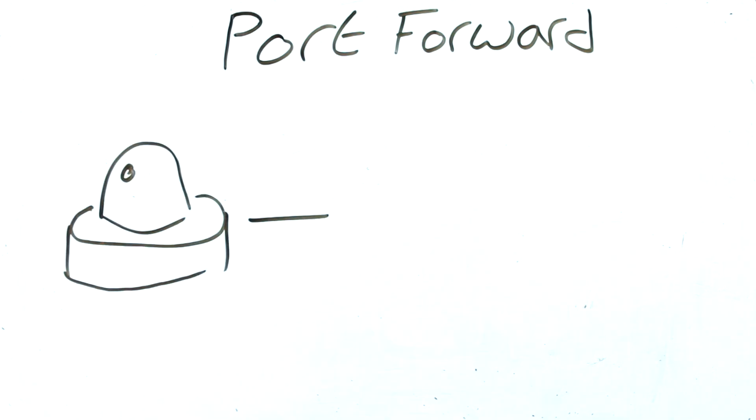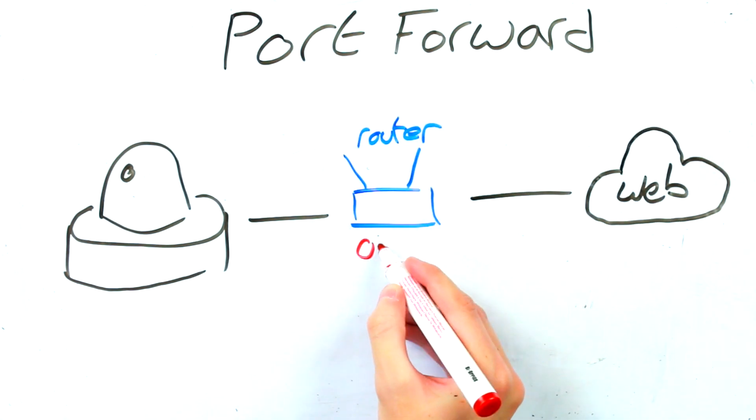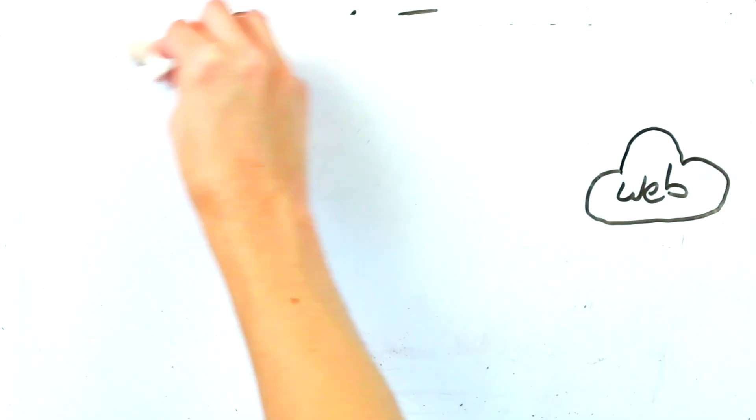P2P was designed to replace the outdated port forwarding technique which was tricky to do and insecure as it required you to open ports on your router to allow your camera to reach the world wide web. And if it wasn't done properly you could compromise the security of your network.